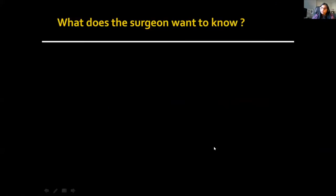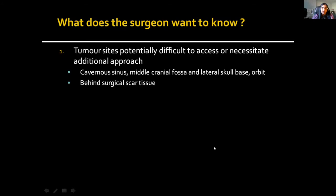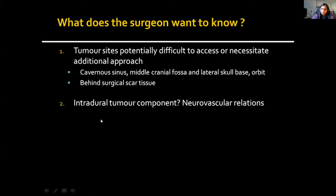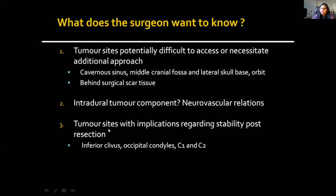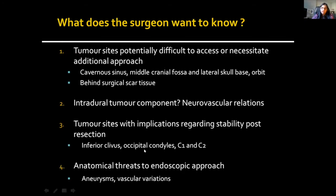Coming to preoperative imaging, what does the surgeon want to know on a preoperative MR? One of the most important things is to know where the tumour is — to assess if there are any potentially difficult access sites by the standard endonasal approach or whether an additional approach is needed. This includes tumour sites involving the cavernous sinus, middle cranial fossa, lateral skull base and orbit, and also tricky tumour hiding behind surgical scar tissue. Is there an intradural tumour component, and if so, what are its neurovascular relations? Are there any tumour sites with implications for stability following surgery, such as involving the inferior clivus, occipital condyles, or upper cervical spine? And finally, anatomical threats to the endoscopic surgeon.